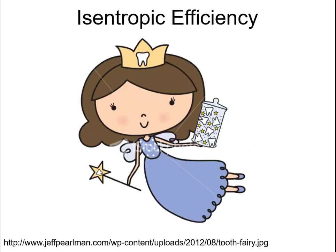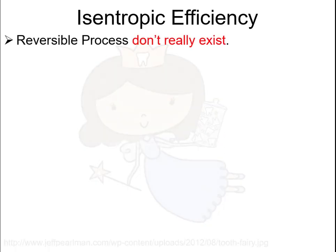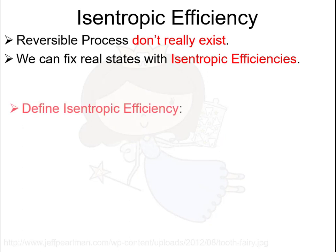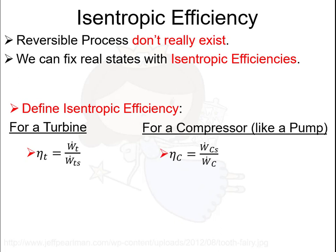Isentropic processes aren't real, so how do we go from isentropic to real processes? We use isentropic efficiencies. These look a little different for turbines and compressors. For a turbine, the real turbine generates less power than the ideal turbine, so we put the real turbine on top and the ideal on the bottom. For a compressor, the ideal compressor consumes less power than the real one, so the real compressor goes on the bottom. If you ever get an isentropic efficiency greater than one, something is wrong.